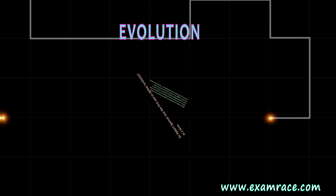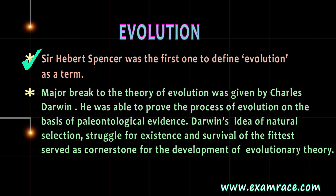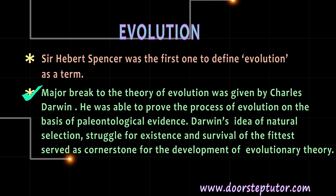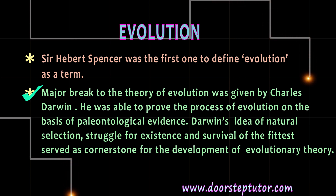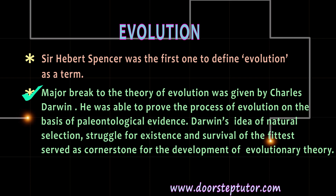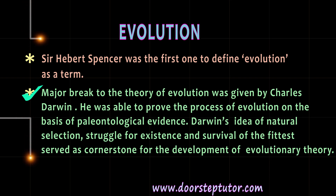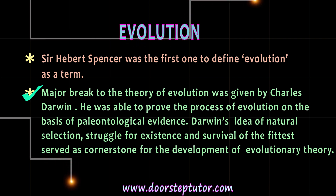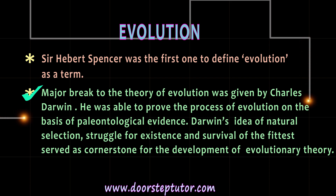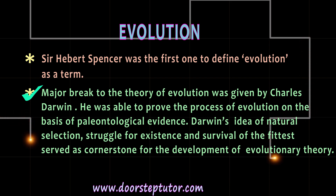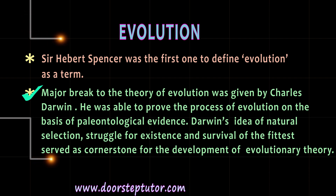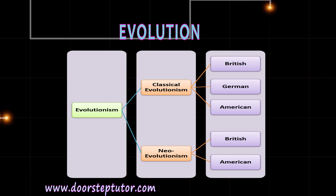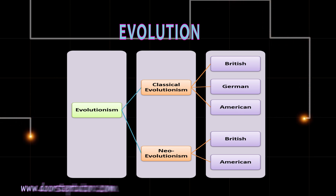Herbert Spencer was the first one to define evolution as a term. A major breakthrough to the theory of evolution was given by Charles Darwin. He was able to prove the process of evolution on the basis of paleontological evidence. Darwin's idea of natural selection, struggle for existence, and survival of the fittest served as a cornerstone for the development of evolutionary theory. Evolutionism as a theory developed in the early 19th century.